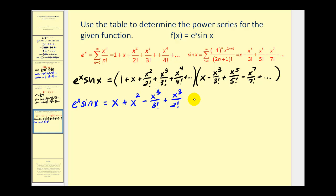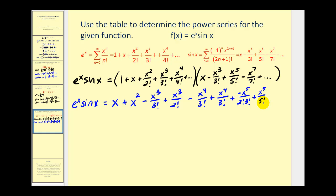For the degree four terms, multiplying x by negative x cubed over three factorial gives minus x to the fourth over three factorial, and multiplying the degree three term by x gives plus x to the fourth over three factorial. For degree five, multiplying the degree two term by the degree three term gives negative x to the fifth over two factorial times three factorial. We could also multiply by x to the fifth over five factorial, and multiply the degree four term by the degree one term, giving plus x to the fifth over four factorial. We'll stop there and not continue to degree six.